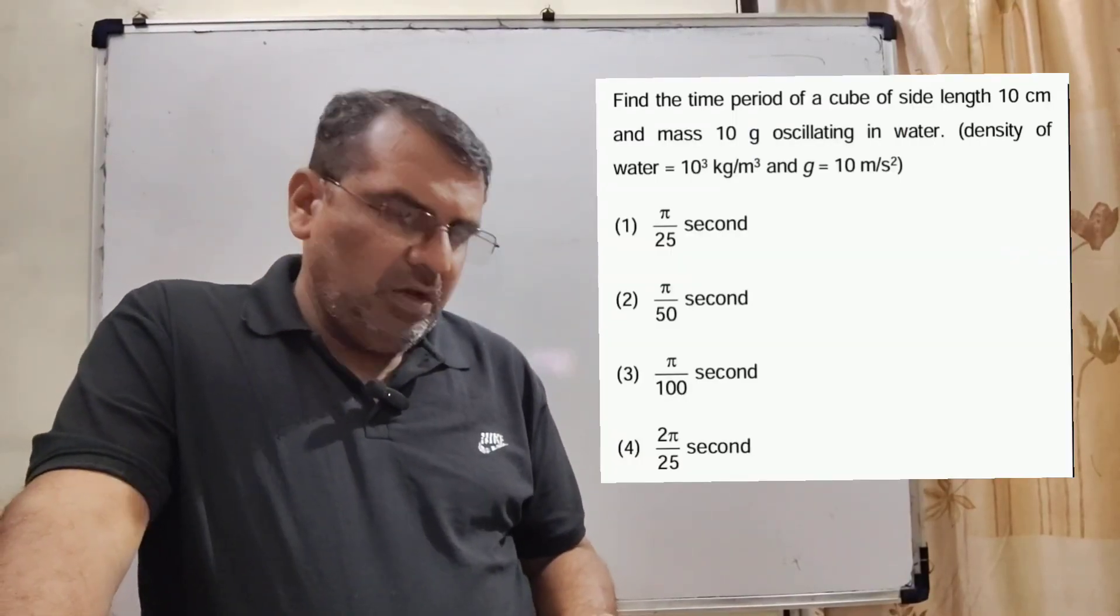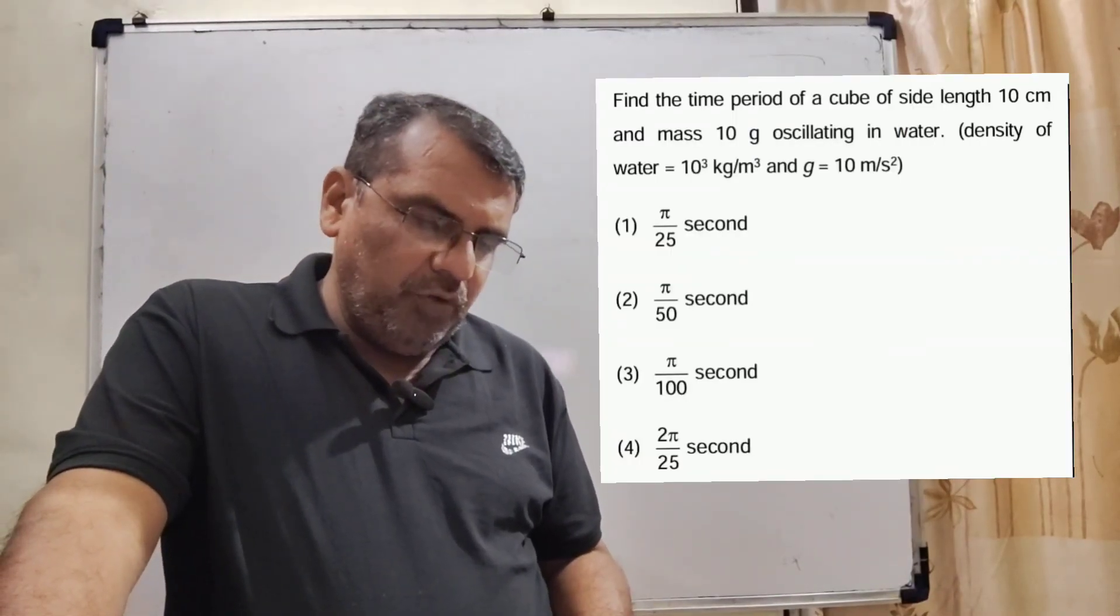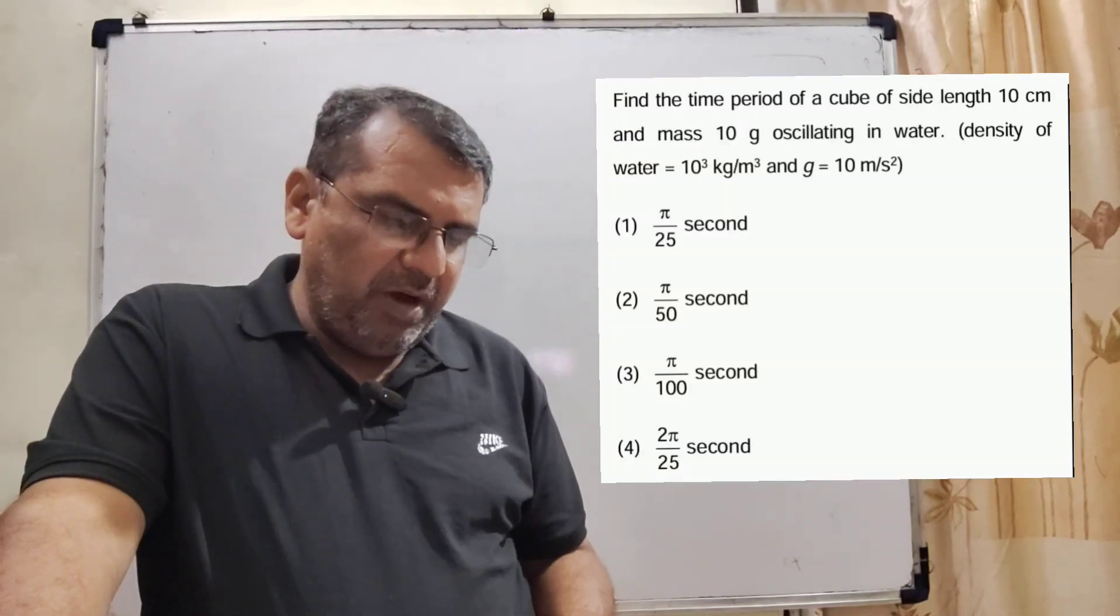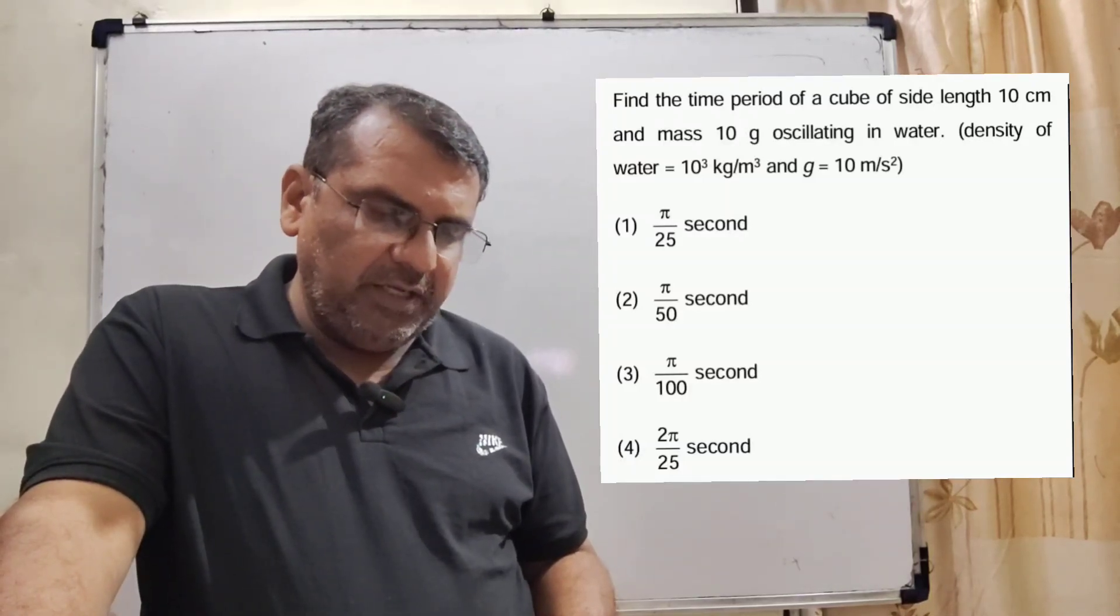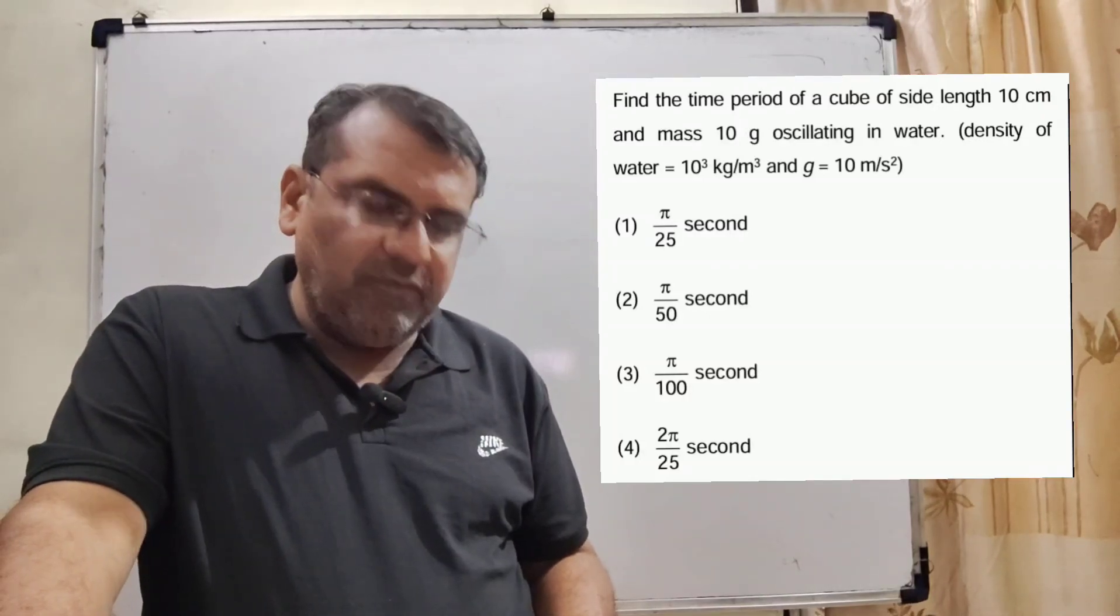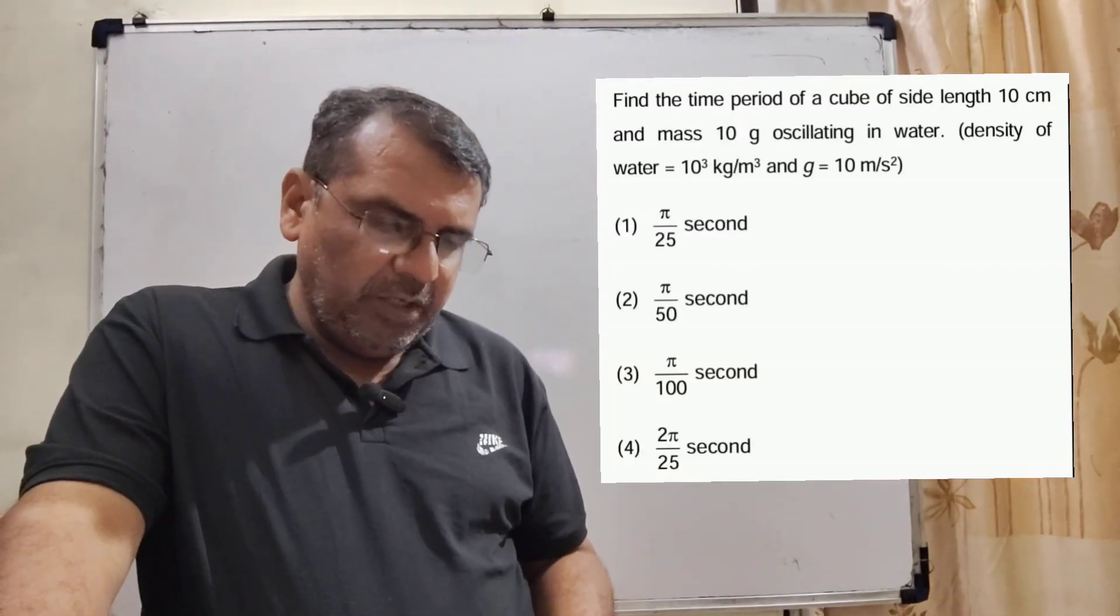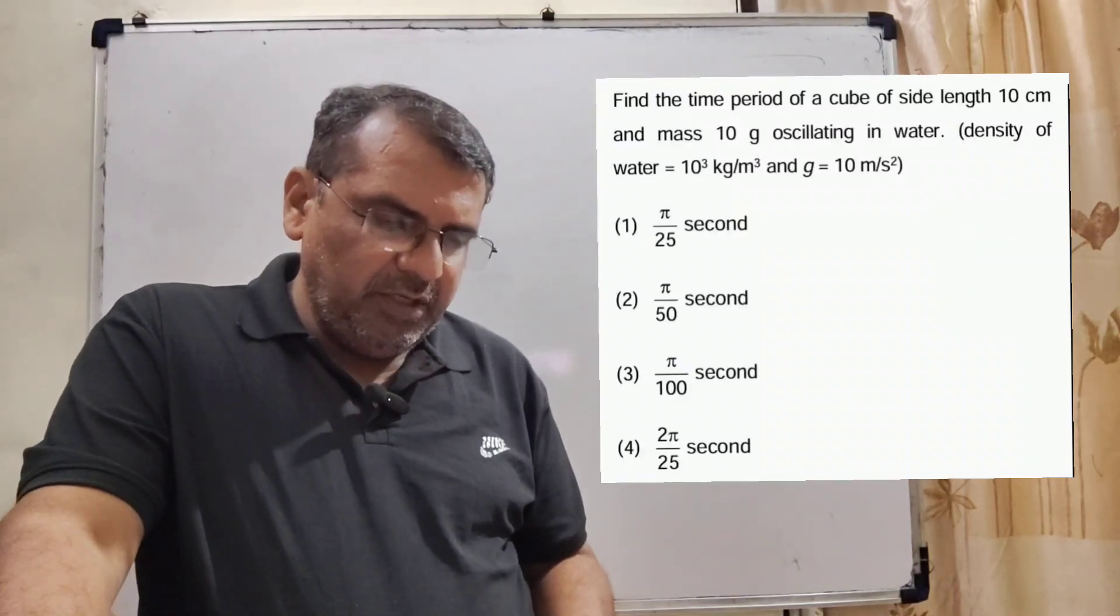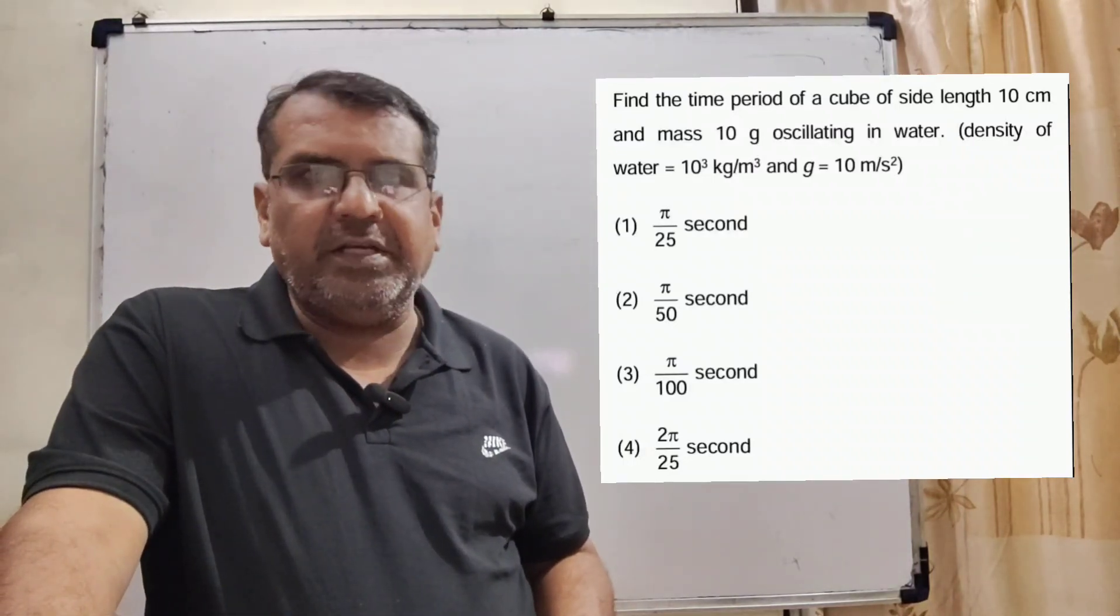Now, here is the question. Find the time period of a cube of side length 10 centimeters and mass 10 grams oscillating in water. Density of water is equal to 10³ kg/m³ and acceleration due to gravity g is equal to 10 m/s².